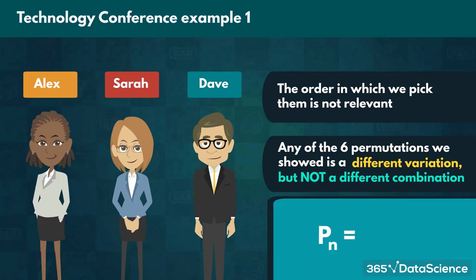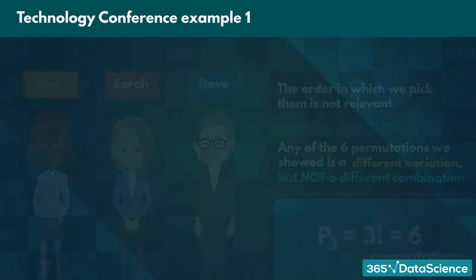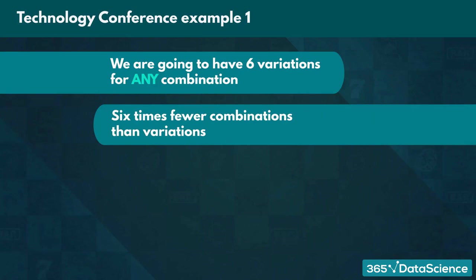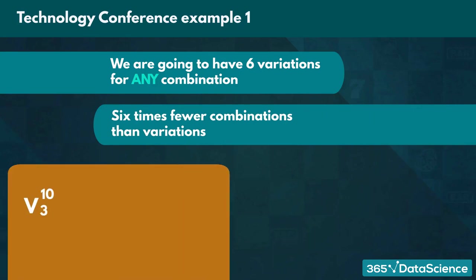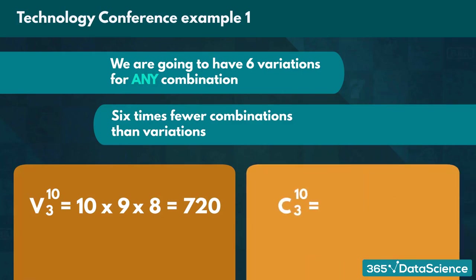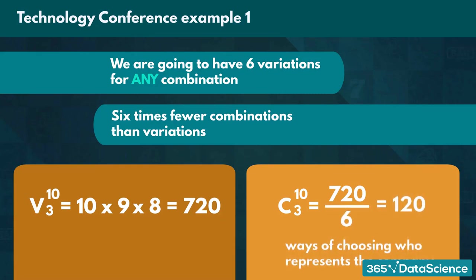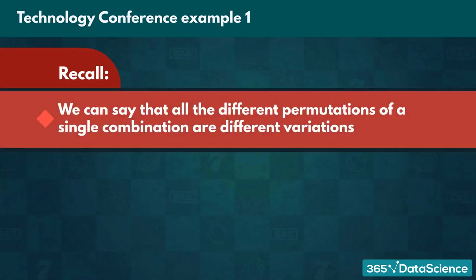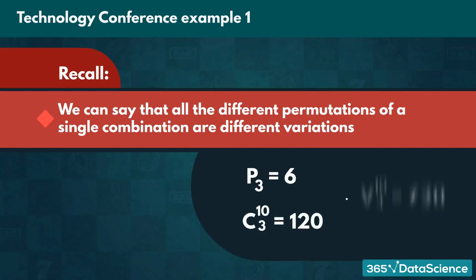Recall that the formula for calculating permutations of n many elements is simply n!. Since n is 3, there would be 6 permutations for choosing Alex, Dave, and Sarah. Since variations count these 6 as separate, we are going to have 6 variations for any combination. This means we end up with 6 times fewer combinations than variations. Using the formulas we already know, there are 10 × 9 × 8 = 720 variations. In terms of combinations, we have 720 / 6 = 120 ways of choosing who represents the company.